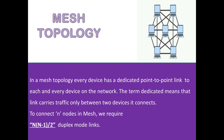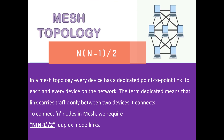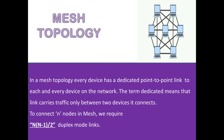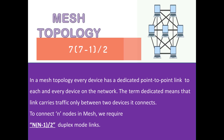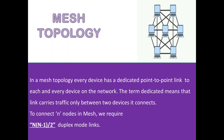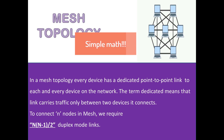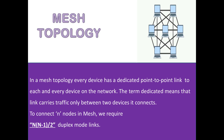The next topology is Mesh Topology. In mesh topology, every device has a dedicated point-to-point link to each and every other device in the network. The term dedicated means the link carries traffic only between the two devices it connects. To calculate the number of links required: if we want to connect n nodes in mesh, we require n × (n − 1) / 2 duplex mode links. In the diagram, with 7 computers, we require 7 × 6 / 2 = 21 links.